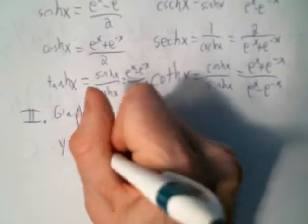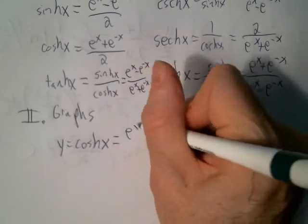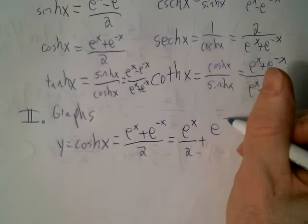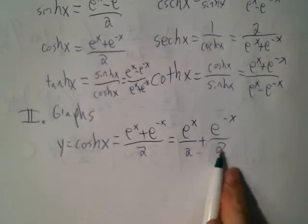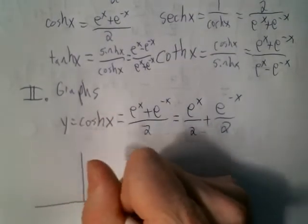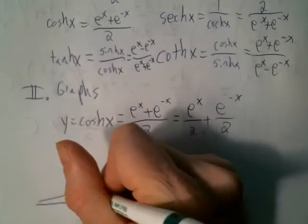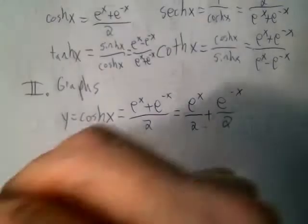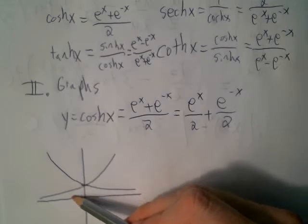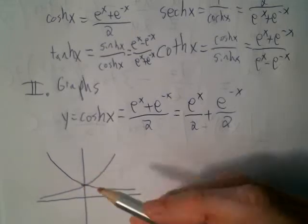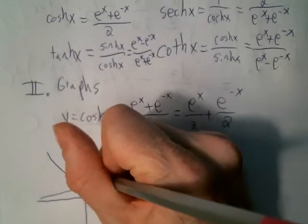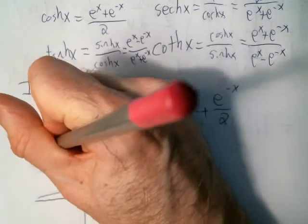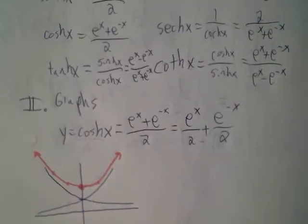Consider y equals cosh(x), which is (e^x plus e^(-x)) over 2. We write it as a sum: e^x over 2 plus e^(-x) over 2. Each one individually is just an exponential we know how to graph. e^x/2 goes through one half, and e^(-x)/2 is a reflected version around the y-axis. The graph of cosh is the sum of y-coordinates: it reaches a minimum of 1 at x=0, and approaches the exponential as x goes to positive or negative infinity.